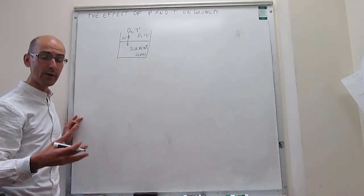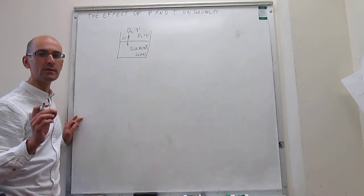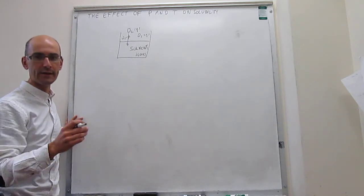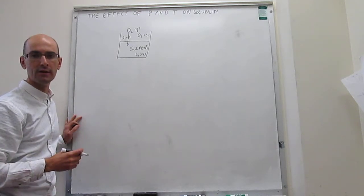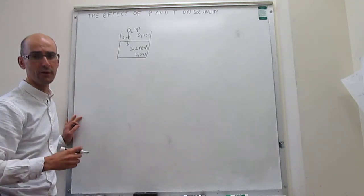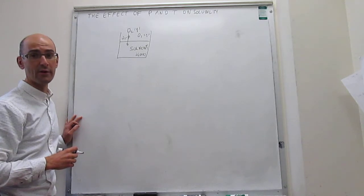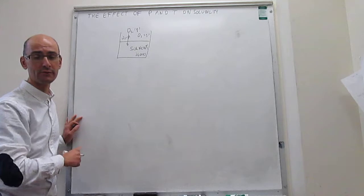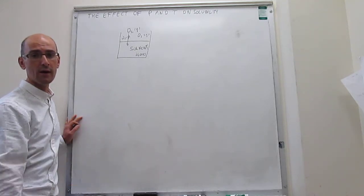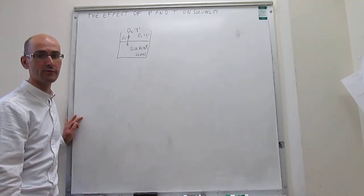Henry's law tells you that there's a direct proportionality between the partial pressure of that oxygen on top of the liquid and the amount of oxygen that you have in the liquid. There's a direct proportionality of the vapor pressure of oxygen with the mole fraction of oxygen in that liquid.